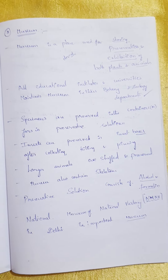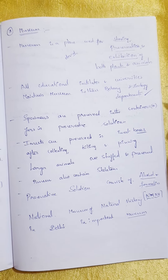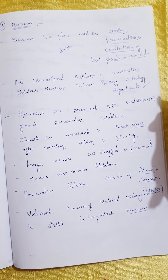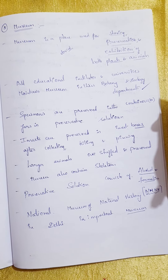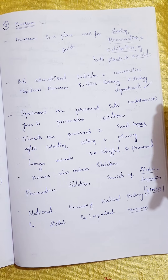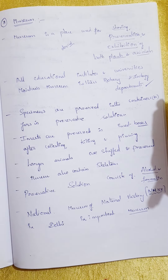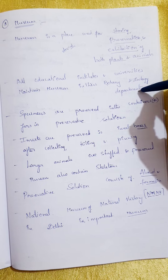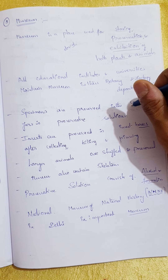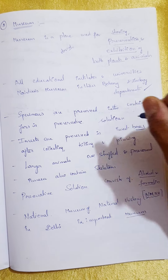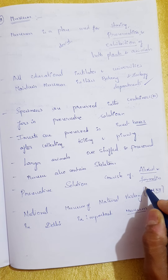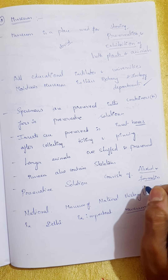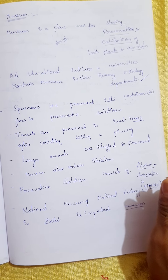In museums, you will see skeletons — like dinosaur skeletons, elephant skeletons — and learn about their shape and size. Specimens are preserved in containers or jars in preservative solutions. Generally, alcohol or formalin solution is used for this preservation.